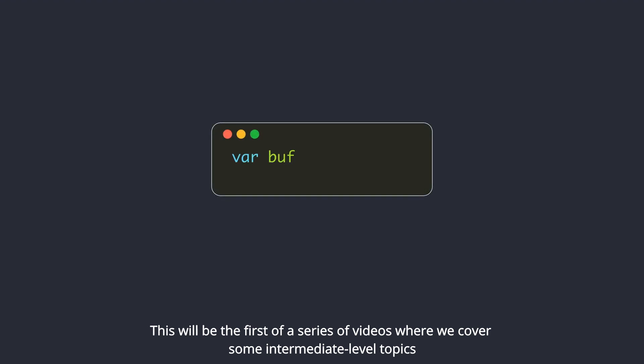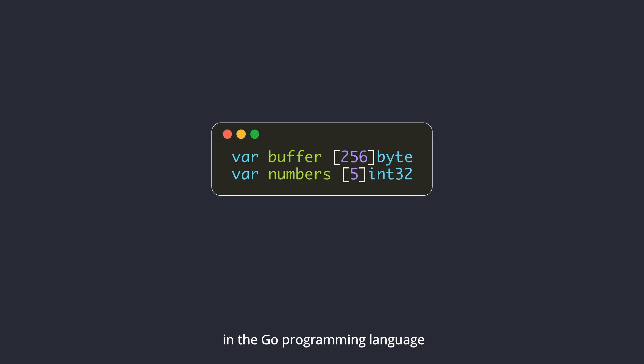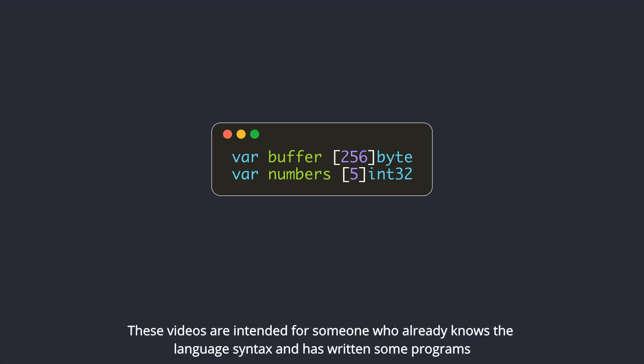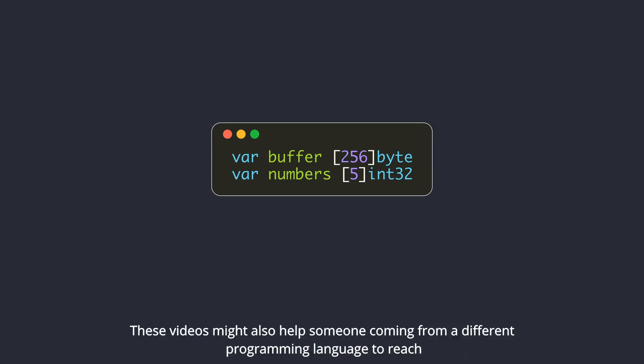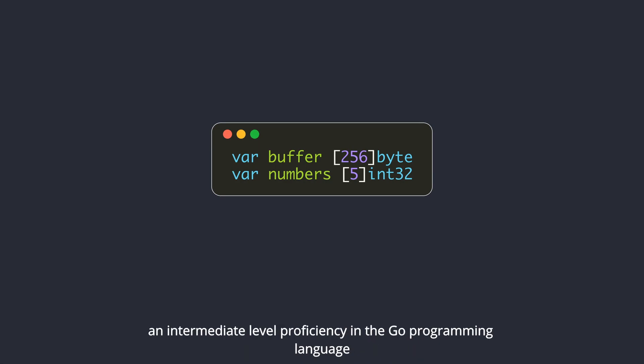This will be the first of a series of videos covering intermediate level topics in the Go programming language. These videos are intended for someone who already knows the language syntax and has written some programs. They might also help someone coming from a different programming language reach an intermediate level proficiency in Go. In this video, we will be mostly covering the mechanics of arrays and slices in Go.